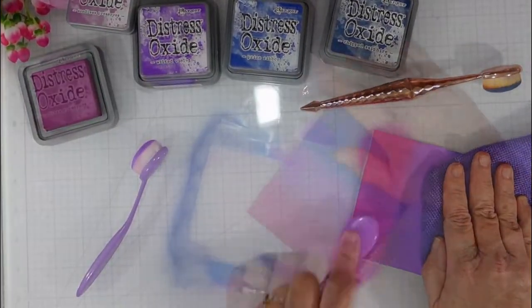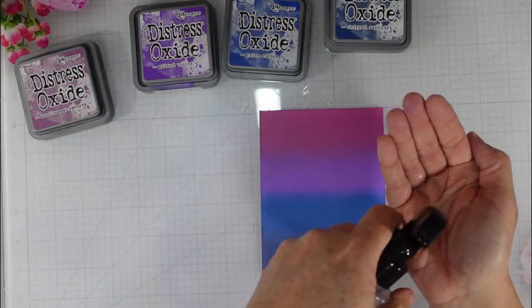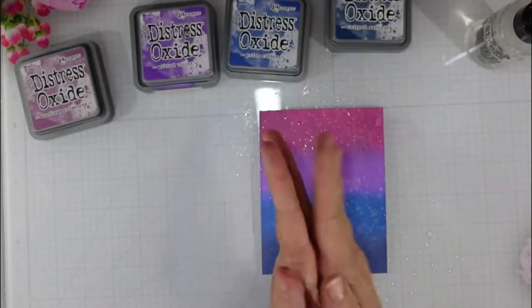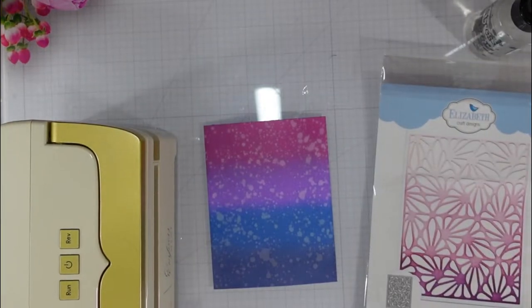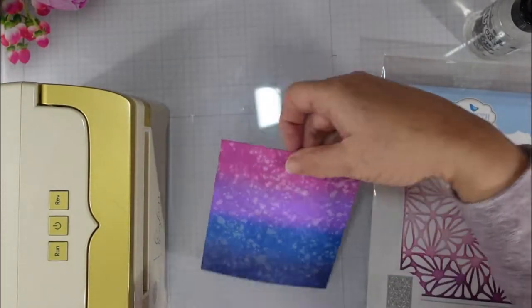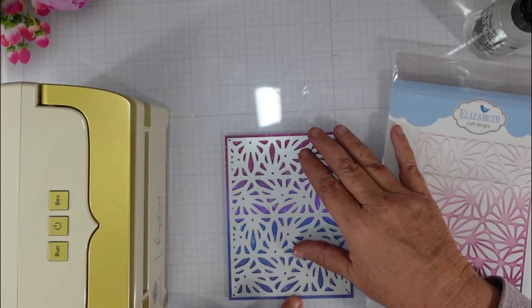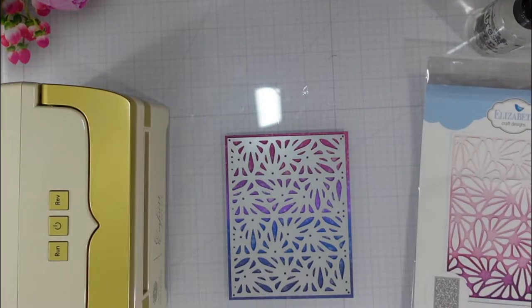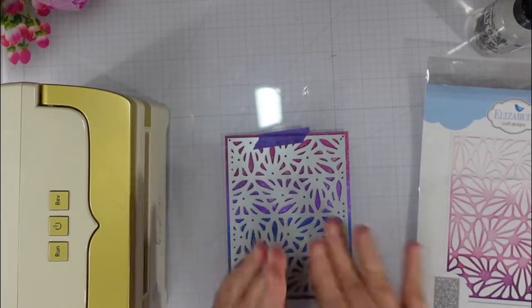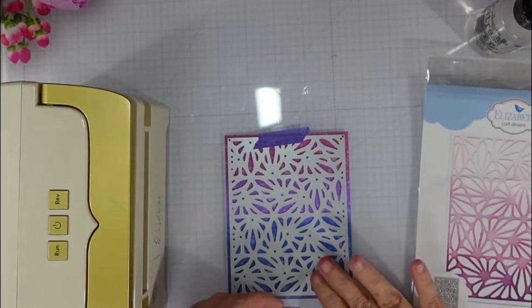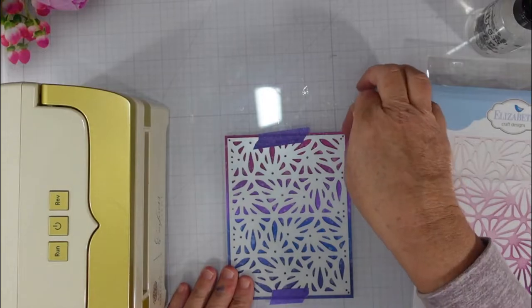Distress Oxide ink is much easier to blend than any other ink that I have in my collection. My favorite thing to do is to oxidize that ink. So I was very heavy-handed. I added some water into the palm of my hand and I clapped over the top of that card panel, and that gave me all those large oxidized spots on the panel.